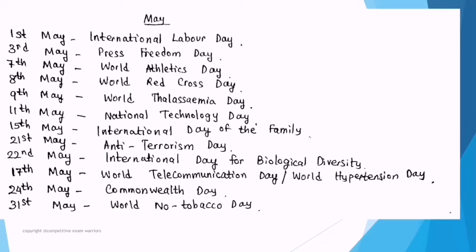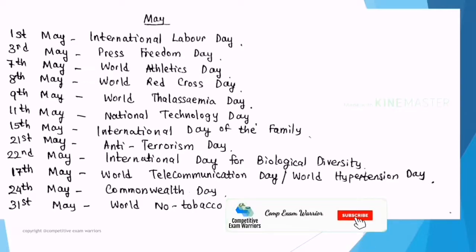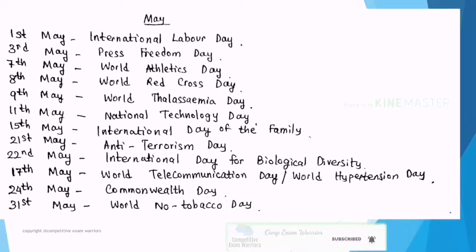May important dates: 1st May — International Labour Day. 3rd May — Press Freedom Day. 7th May — World Athletics Day. 8th May — World Red Cross Day. 9th May — World Thalassemia Day. 11th May — National Technology Day. 15th May — International Day of Families. 21st May — Anti-Terrorism Day, because Rajiv Gandhi was martyred on this day.